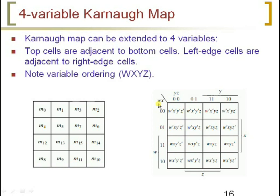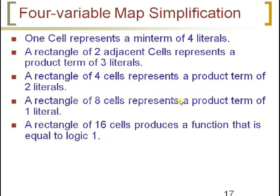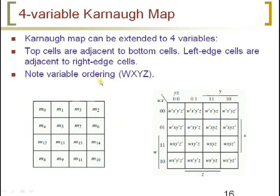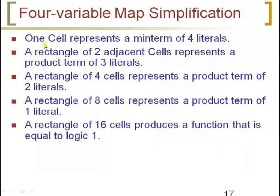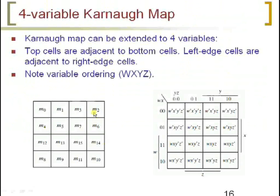WX should be on one side and YZ should be on the other side. One cell represents a min term of 4 literals. If I am going with only one cell, it is going to represent 4 literals in a 4-variable map. For example, if I am only grouping M2, then this particular cell represents 4 literals: W, X, Y, and Z.